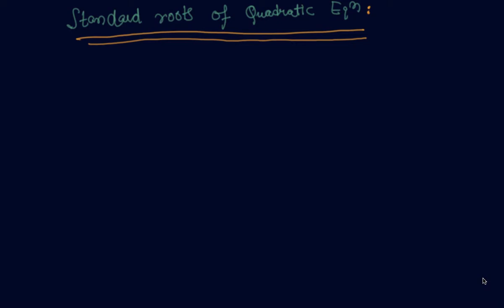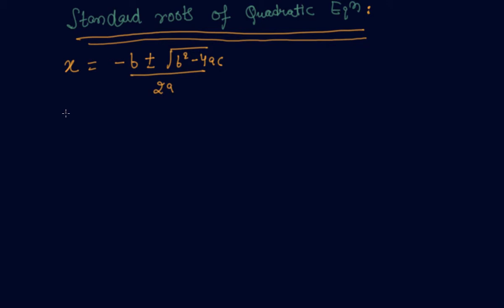In today's video I will tell you about the standard formula for the roots of a quadratic equation. The formula is x equals minus b plus minus root of b square minus 4ac upon 2a. The standard equation of a quadratic equation is ax square plus bx plus c equal to 0.